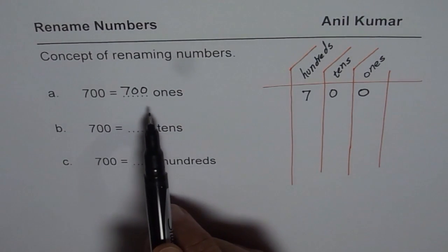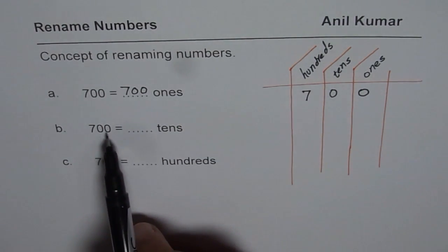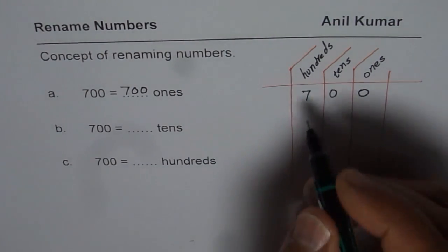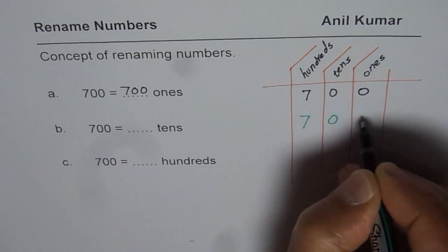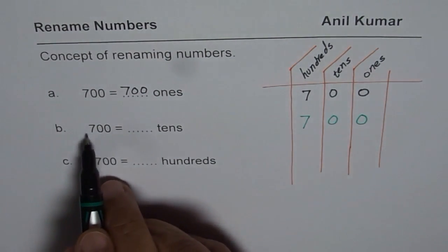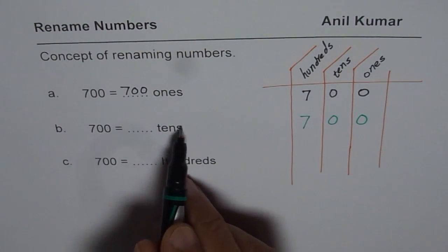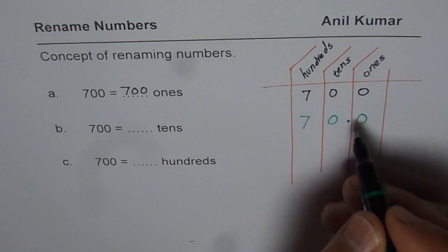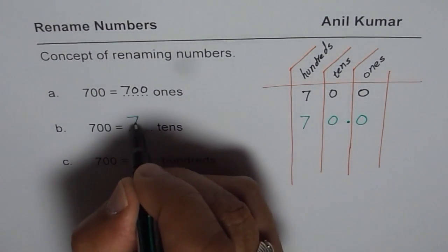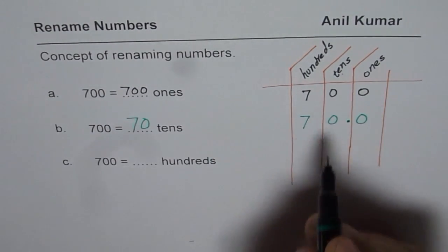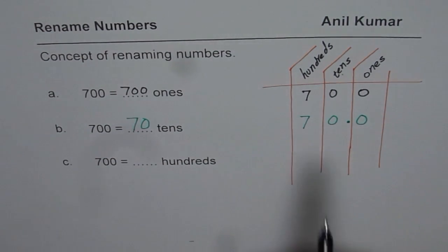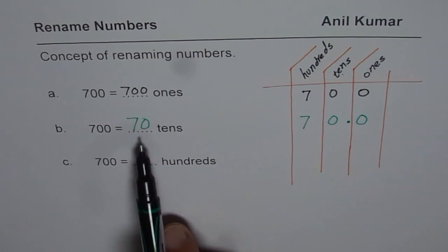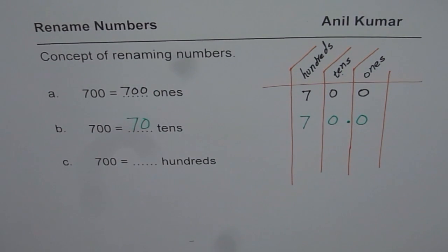Now let's see how to rename 700 as tens. To write 700 as tens, let me rewrite 700. We want to know how many tens make 700, so we end at the tens column. Put a decimal there — so you get 70.0, meaning the answer is 70. So 70 tens is also 700. That is how you rename 700 as 70 tens.